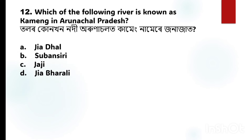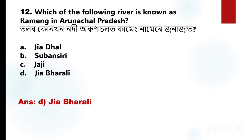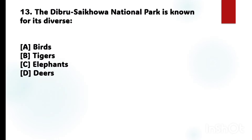Next question number 12: Which of the following rivers is known as Kameng in Arunachal Pradesh? The correct answer is Option D: Jia Bhoroli River (Gya Pharali Nodik).